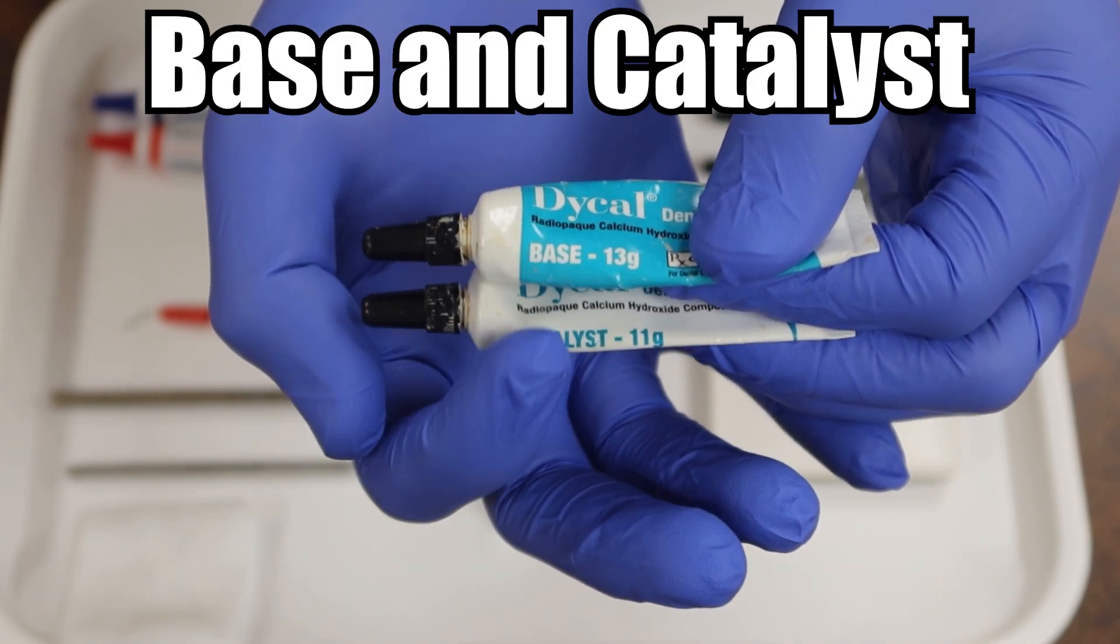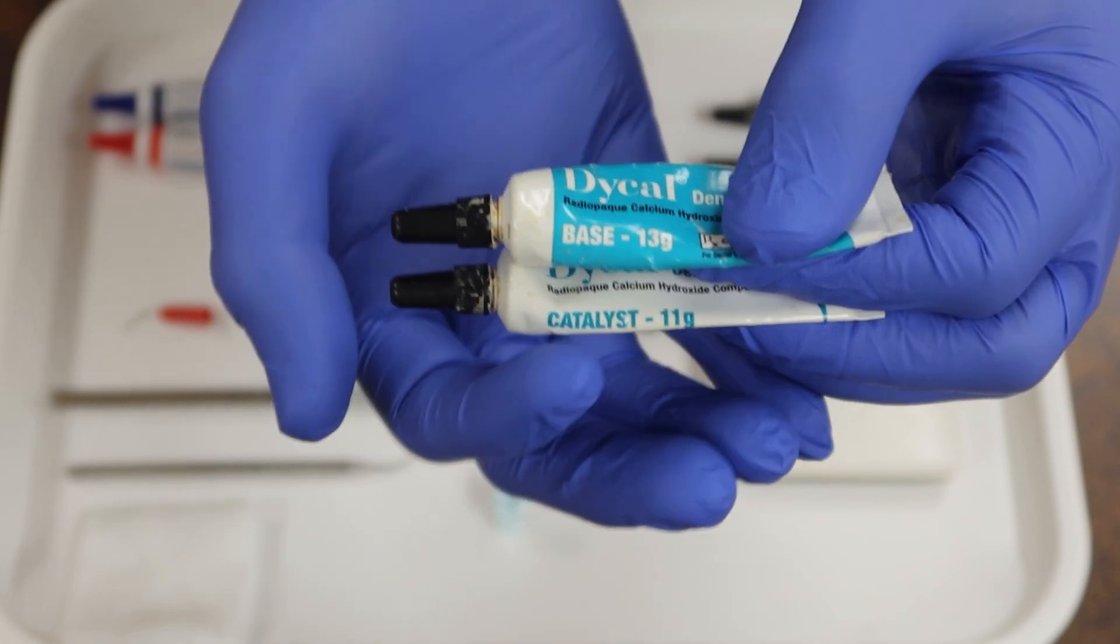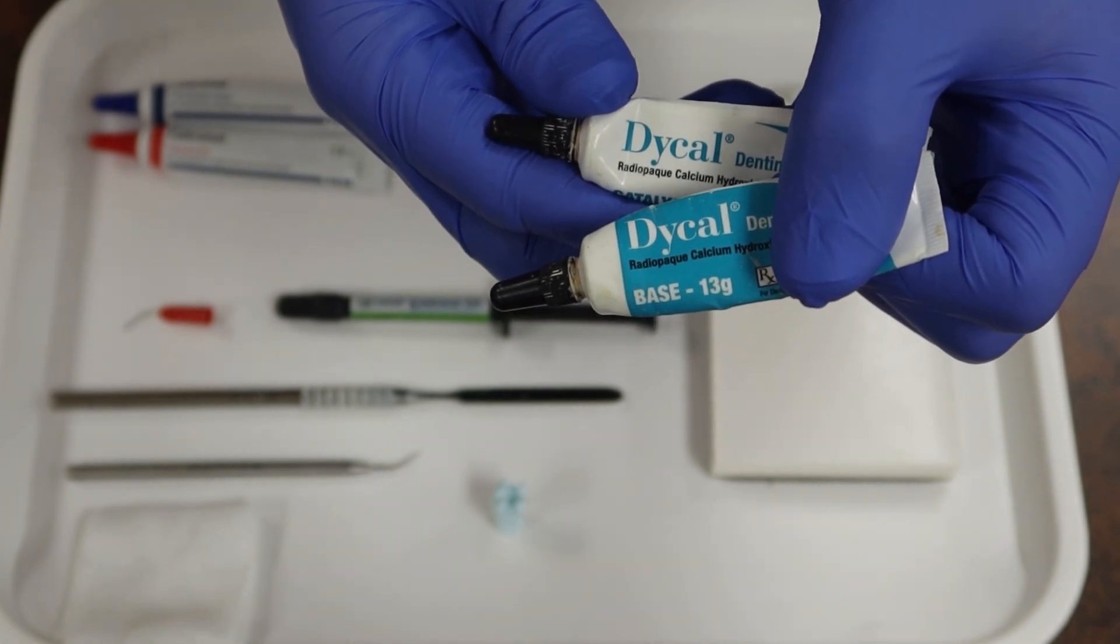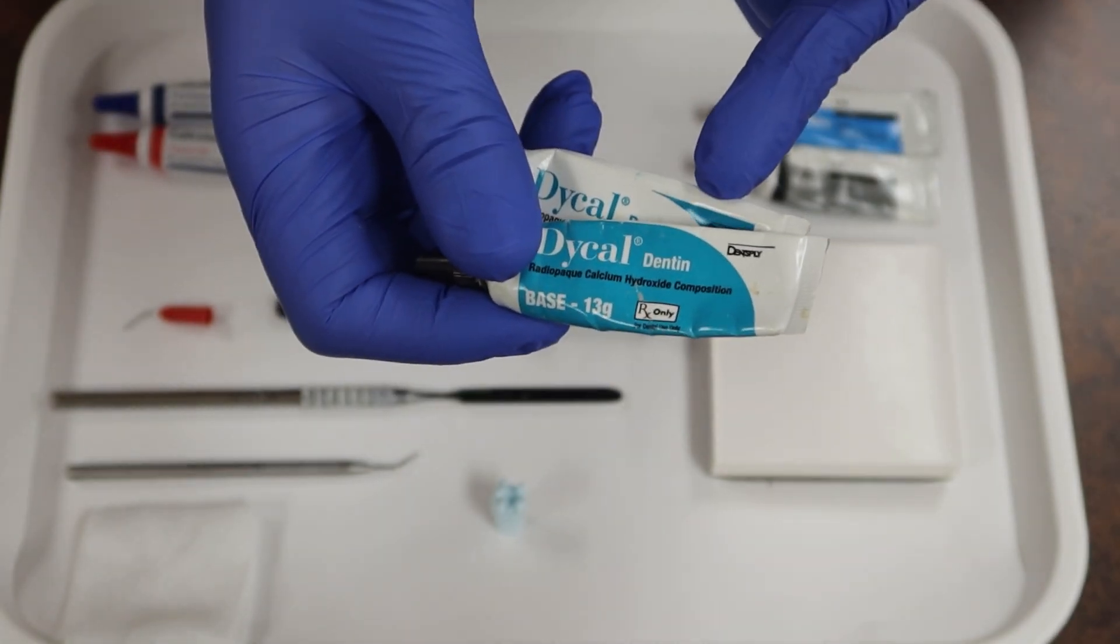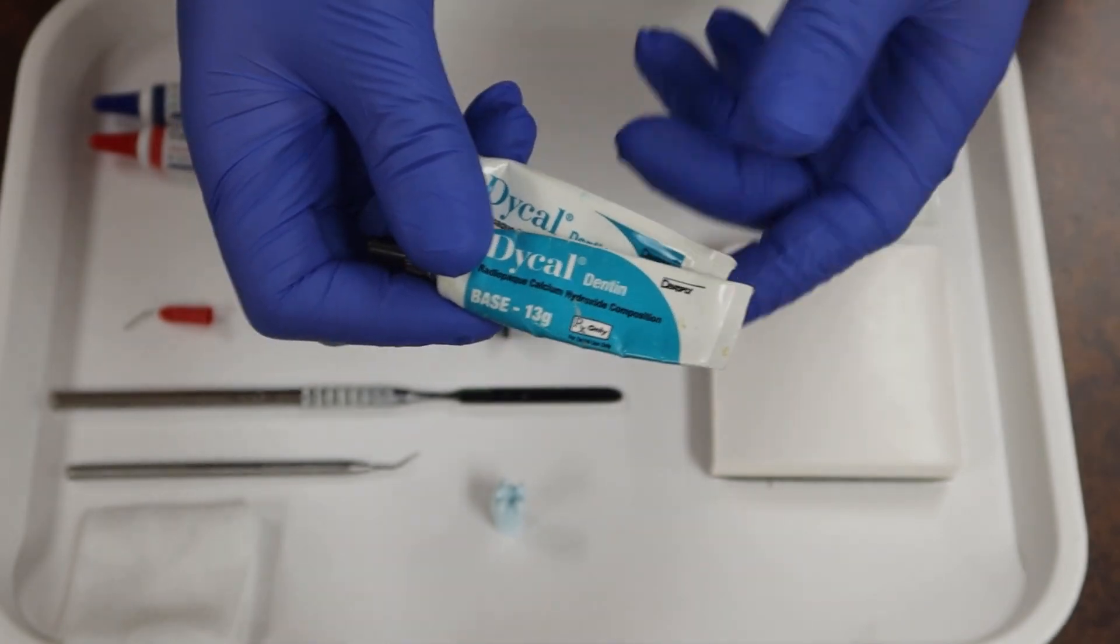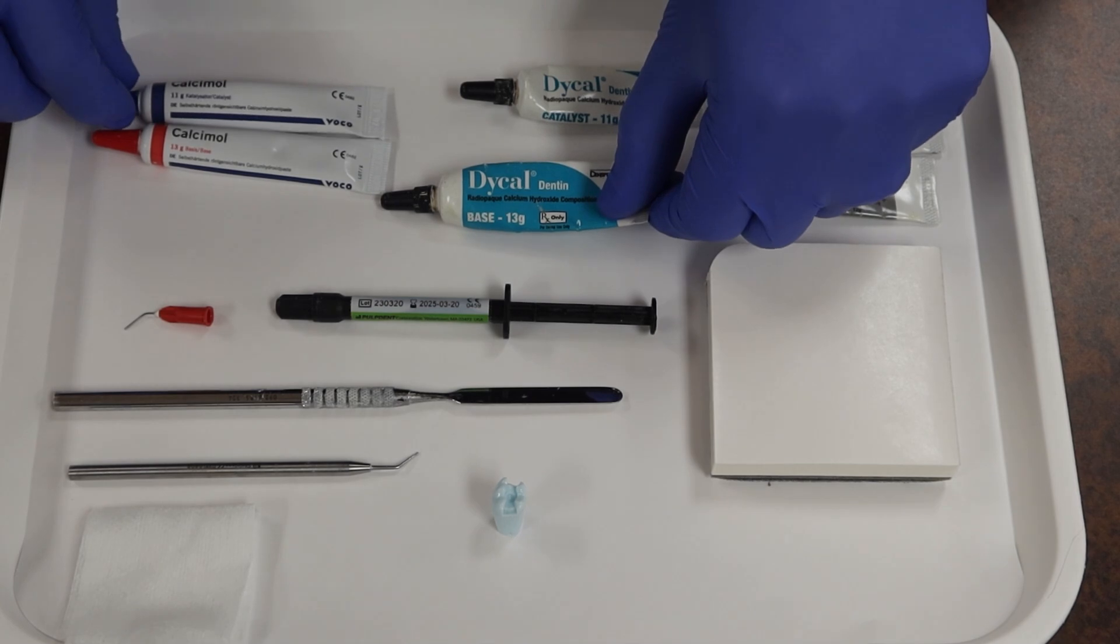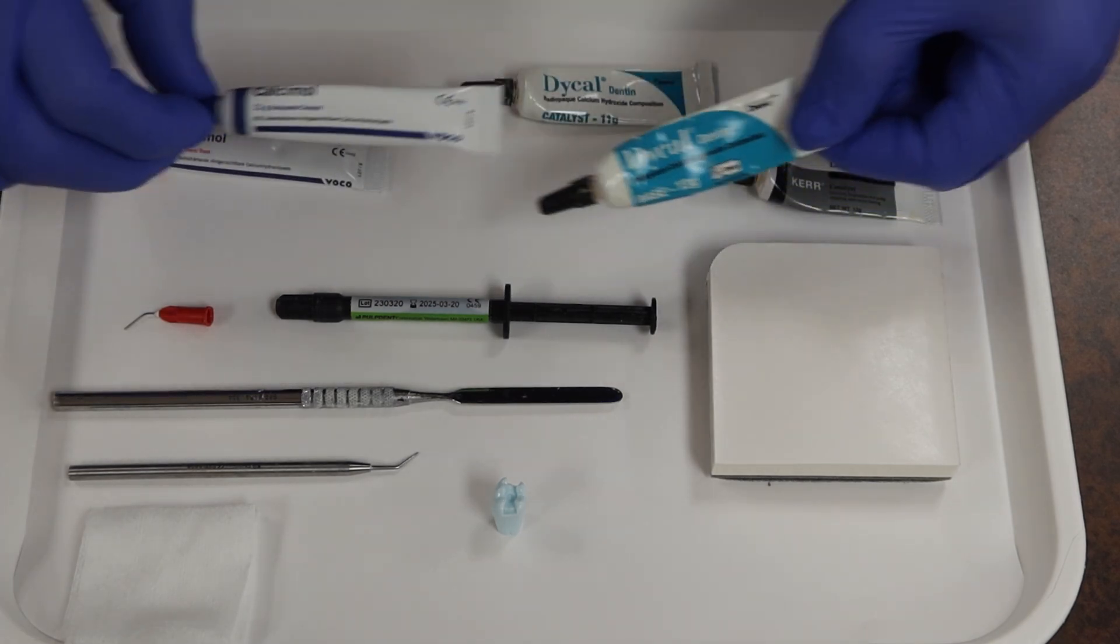Some of them are going to be called a base, some of them are going to be called catalyst and you're going to want to make sure that they are of the same brand. Such as right now we're using Dical and that is of the brand Dent Supply. And so we don't want to go and cross contaminate using my base from Dical over with my Calciumol catalyst. They are just not going to jive together.